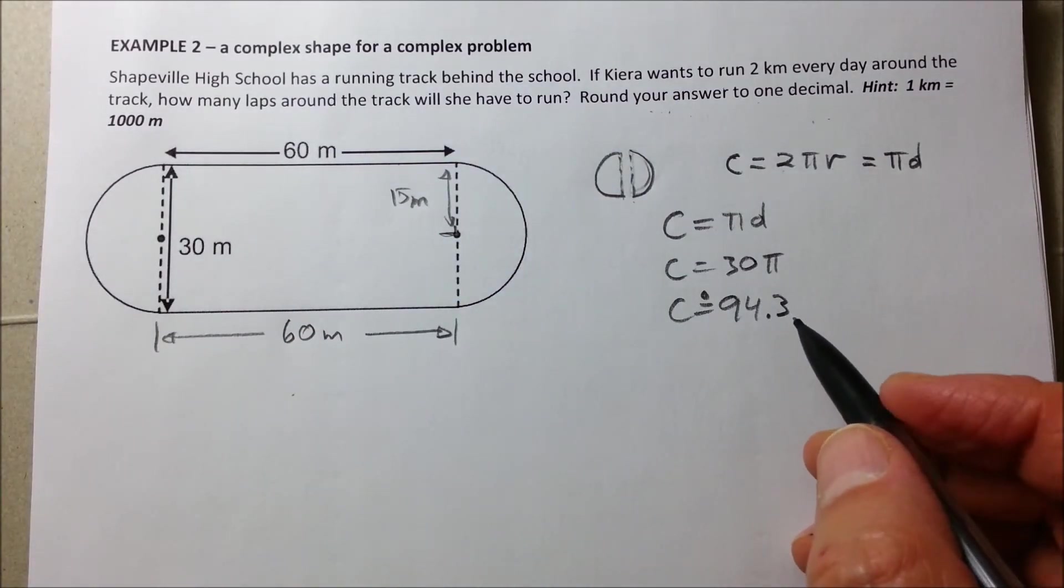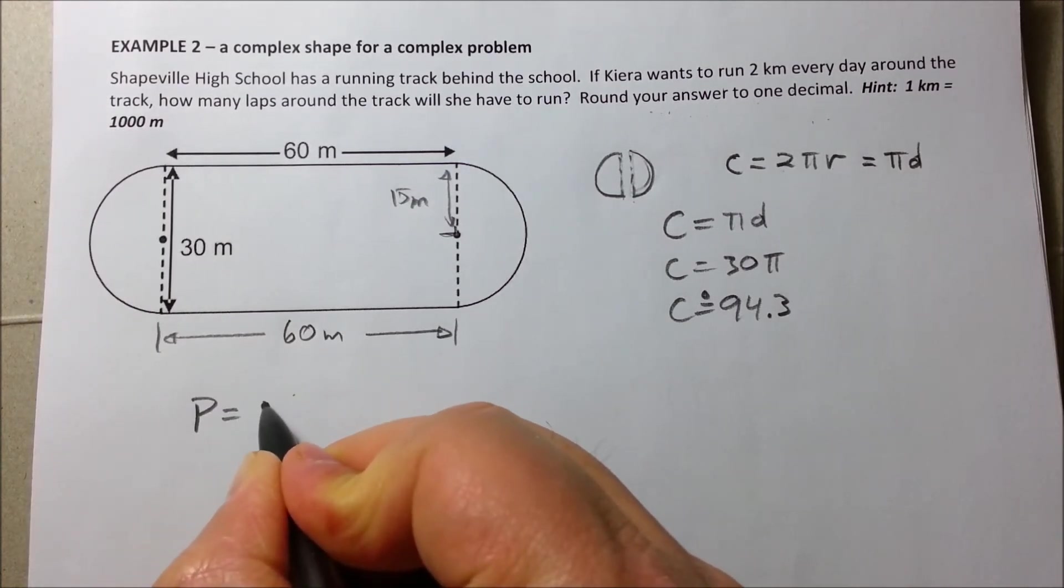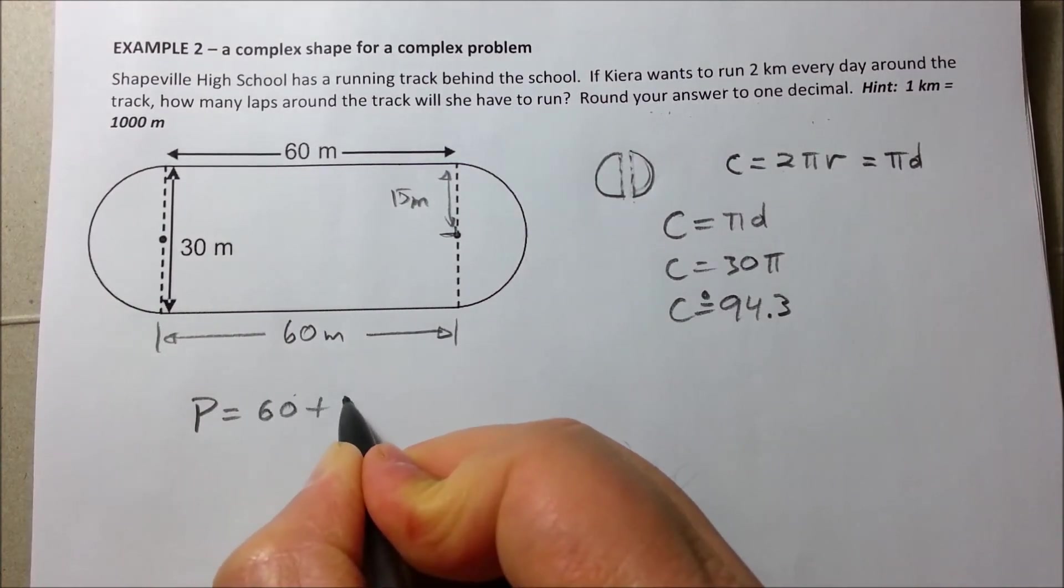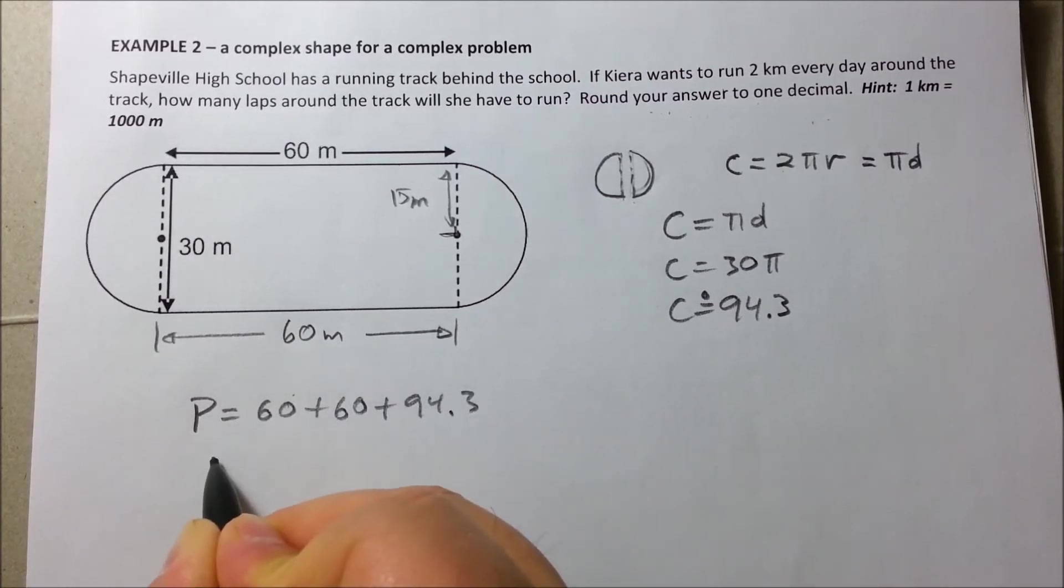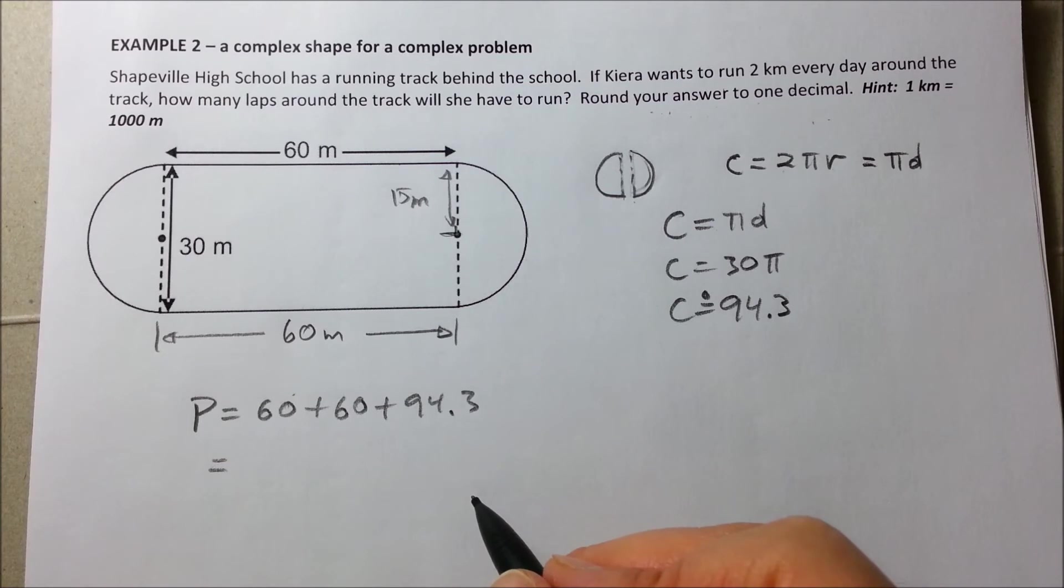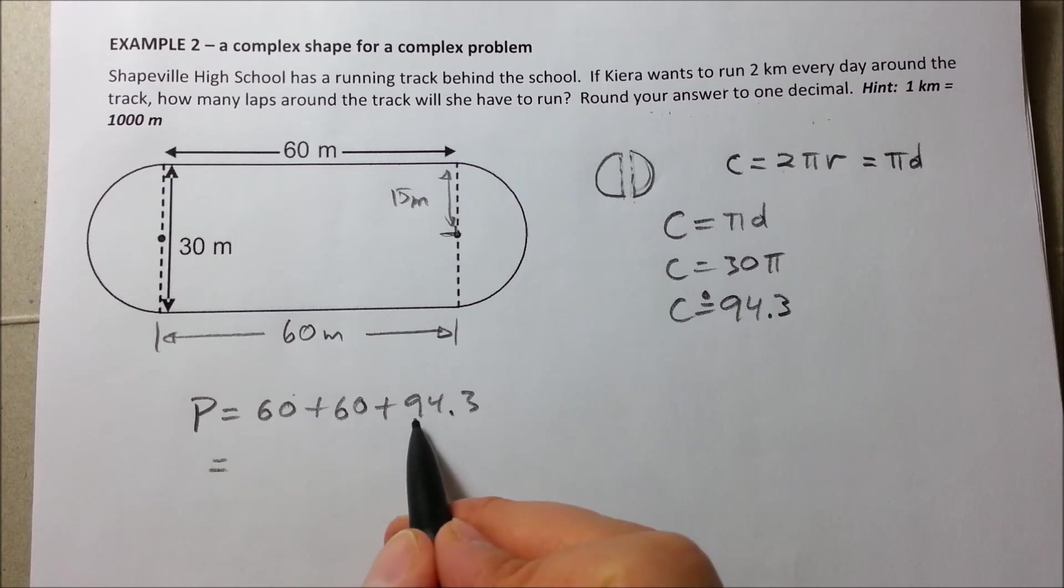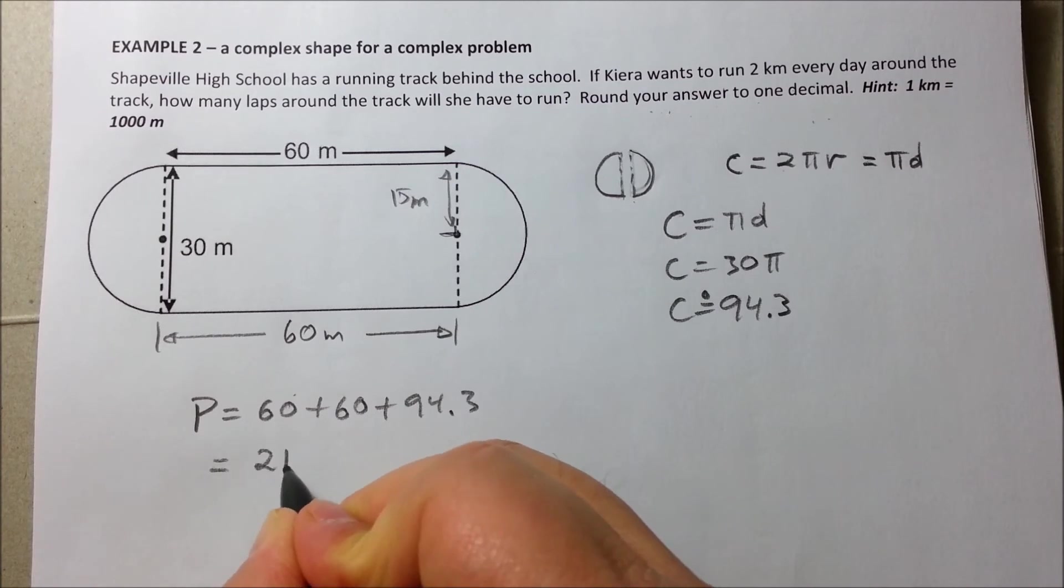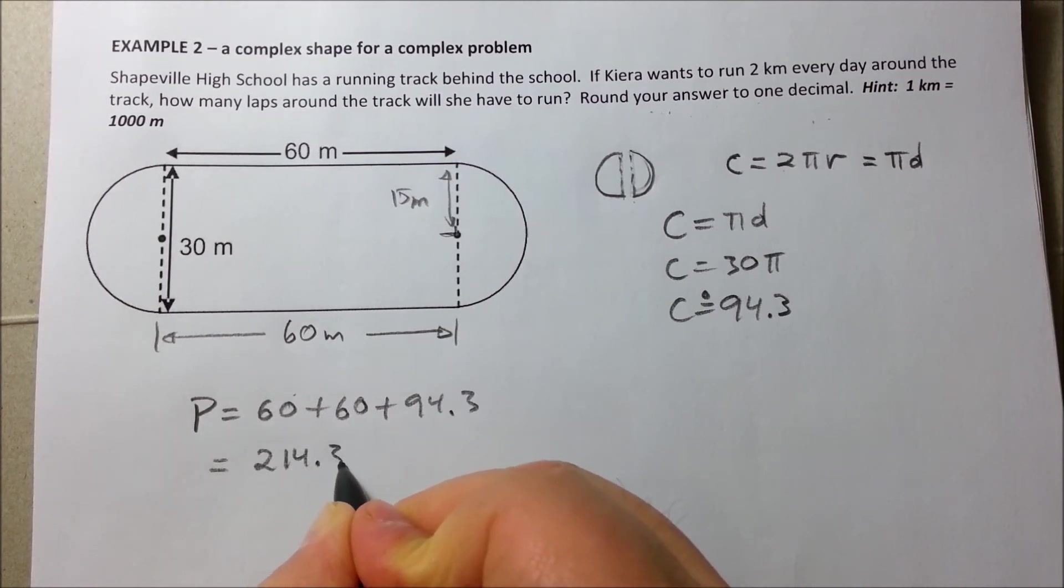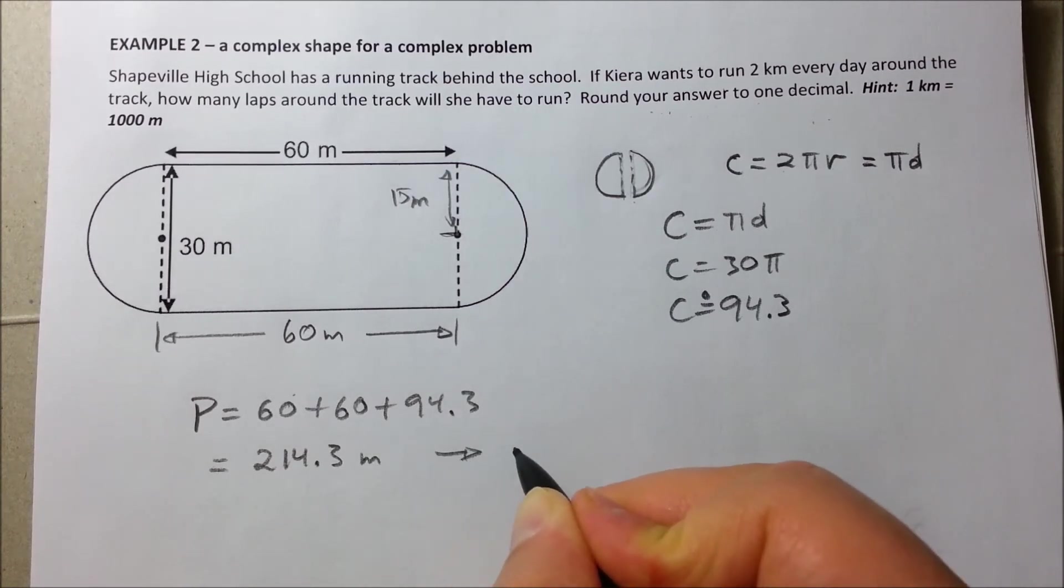So now, let's find out the length of one lap. So, the perimeter of this running track is equal to 60 plus 60 plus 94.3. That gives us 214.3 meters. That would be 1 lap.